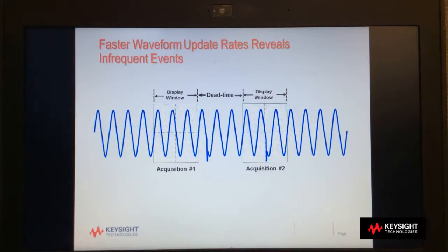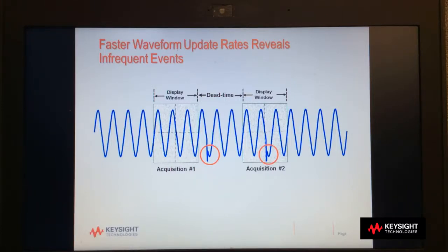In this example, the dead time has been reduced and now the scope missed the first glitch, but it caught the next one. The bottom line is faster waveform update rates and lower oscilloscope dead times will improve the scope's probability of capturing random and infrequent events.